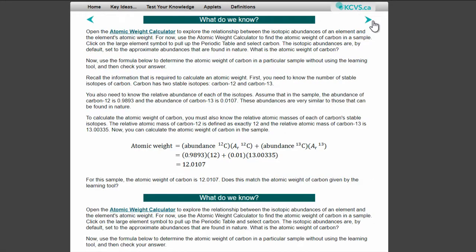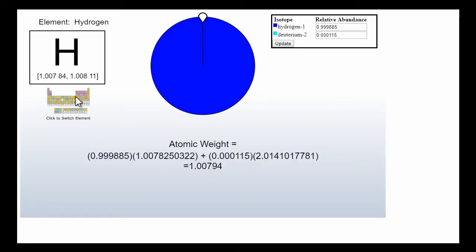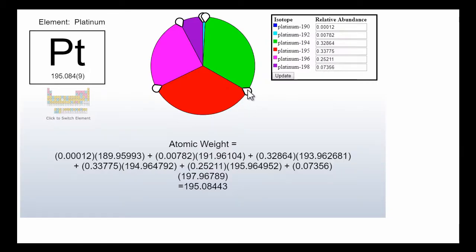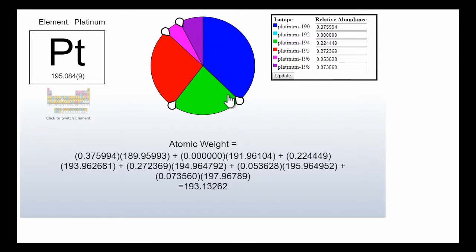Interactive learning tools allow the user to explore mathematical relationships and the nature of experimental evidence. This atomic weight calculator learning tool allows users to see how changing the relative abundance of an element's isotopes determines the atomic weight of an element. They can even change the isotope ratio beyond its normal scope to see the importance of isotope ratios in calculations of standard atomic weights.